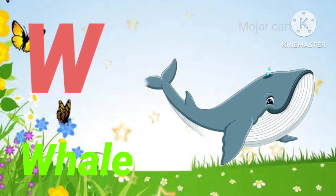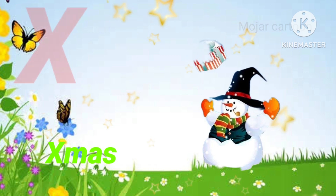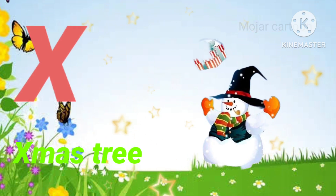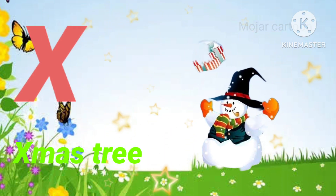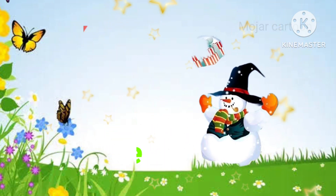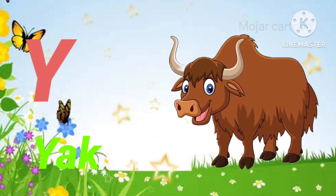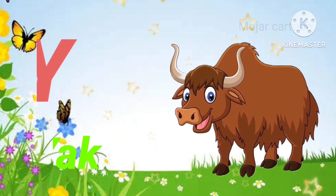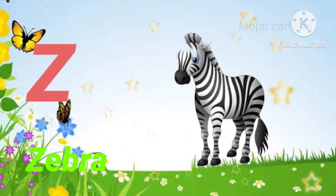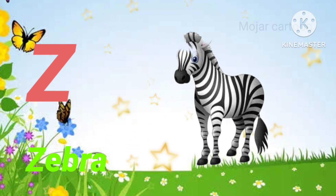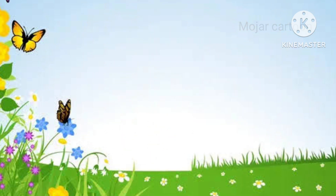W. W is for whale. X. X is for x-mas tree. Y. Y is for yak. Z. Z is for zebra. See you again!